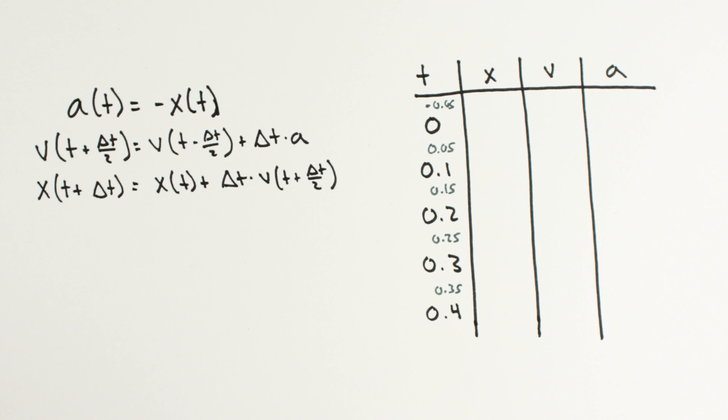At time 0, our mass is not moving, and at position 1 meter. As soon as we let go, we know that since a is equal to minus x, our mass will be accelerated at a rate of minus 1.